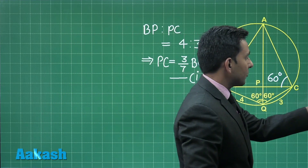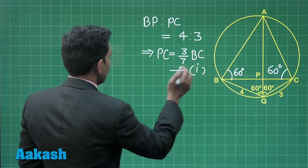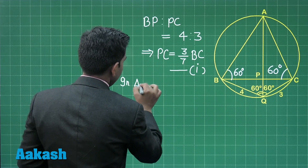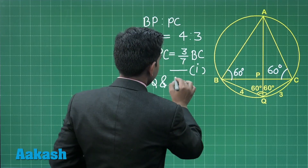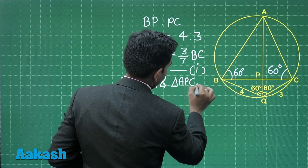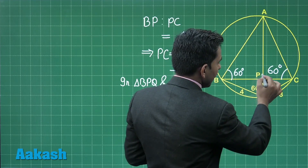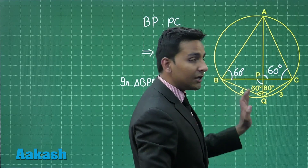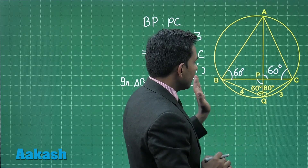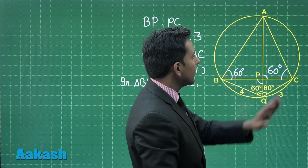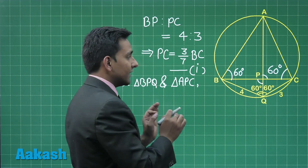Further, we will consider two triangles: triangle BPQ and triangle APC. In these two triangles, the vertically opposite angles are equal — that is, the measure of angle BPQ is equal to the measure of angle APC. Second, the measure of angle BQP is equal to the measure of angle ACP.